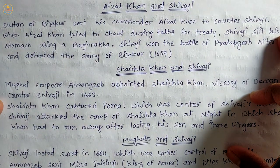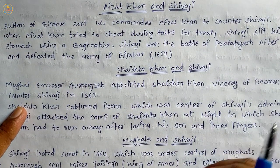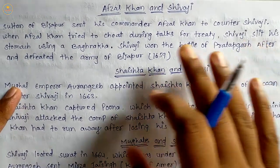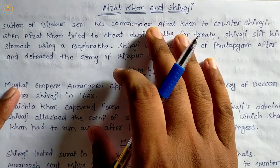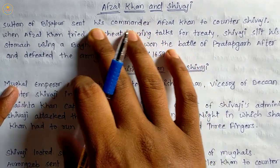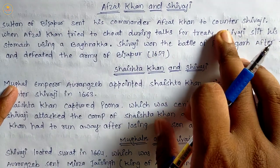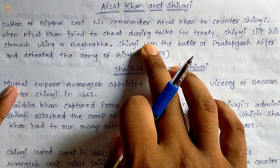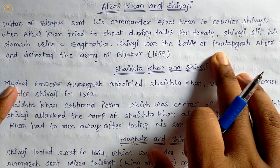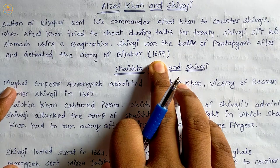Now we see the confrontations of Shivaji with Afzal Khan, Shaista Khan, Muazzam, Jaswant Singh, and Mirza Raja Jai Singh. To crush the Maratha power, Adilshah, the Sultan of Bijapur, sent Afzal Khan, who was the commander of Adilshah, to counter Shivaji. When Afzal Khan tried to cheat during talks for a treaty, Shivaji sealed his stomach with a bagh nakh. Shivaji won the battle at Pratapgad and defeated the army of Bijapur in 1659.